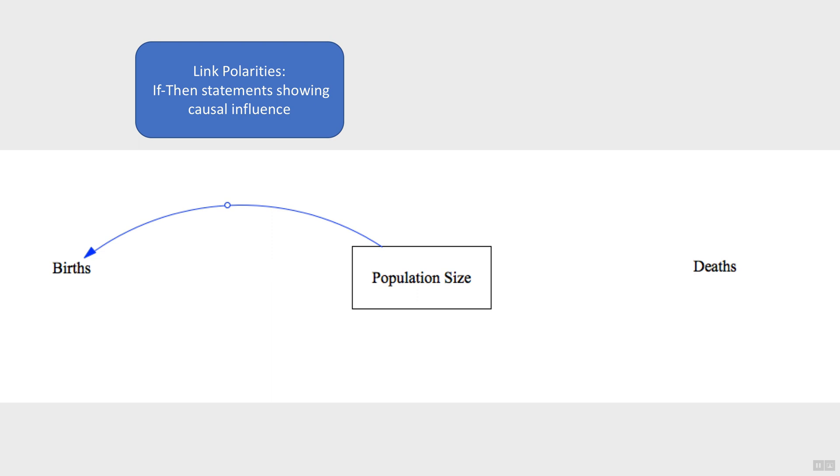Population size affects births. The bigger the population size, the more births that are likely to occur. So an if-then statement would be, if the population size increases, then the births increase. An arrow from population size to births denotes a causal relationship.